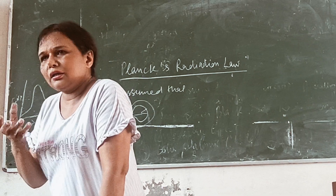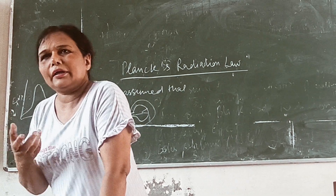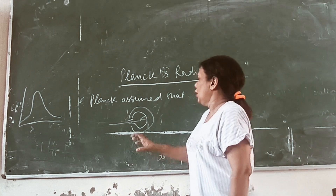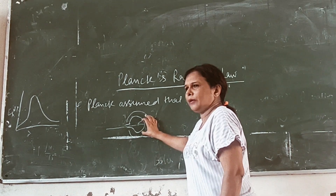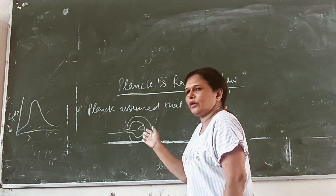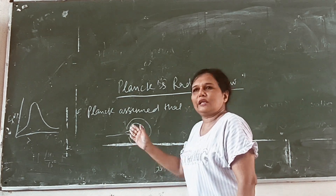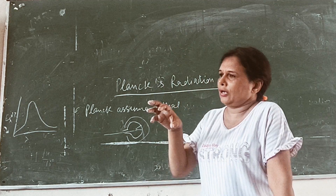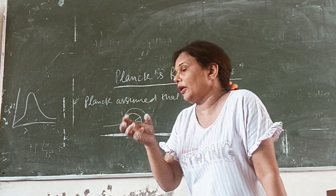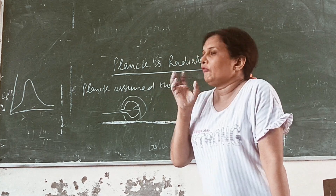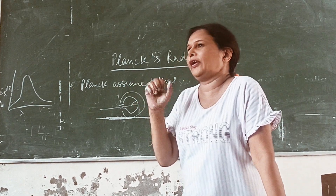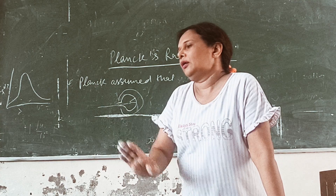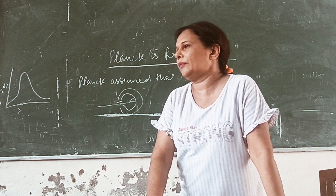The black body has constituent particles, and electrons are formed. When radiation falls, they are associated with some energy — the energy of the constituent particle. They will be in motion, vibrate, and oscillate. So they will act as oscillators. The black body will absorb the energy of the radiation incident upon it. They will oscillate about their mean position.